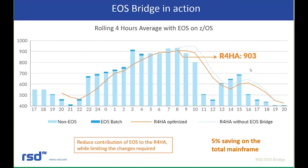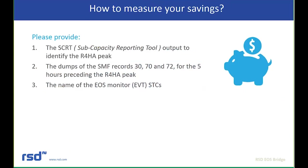What we've calculated is about a 5% savings on total mainframe MIPS usage. You're reducing the contribution of EOS to MIPS utilization while limiting the changes required in your environment, because you're moving that viewing data from the mainframe to the open systems side, and it's completely transparent to users. To measure your savings, we will ask you for the SCRT — the subcapacity reporting tool — which identifies the R4HA peaks. We will also ask for dumps of the SMF records.